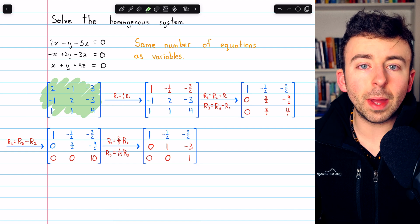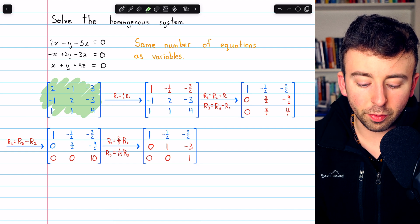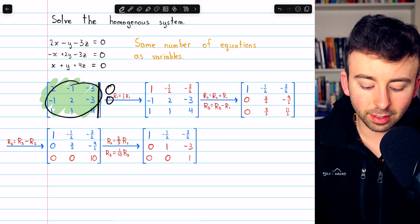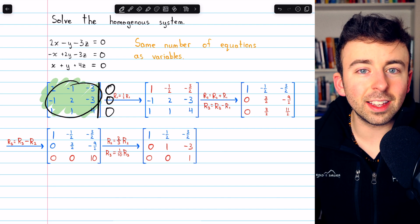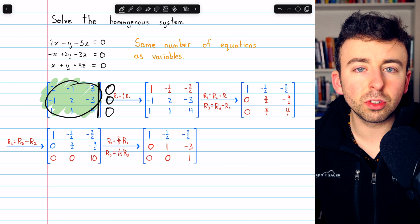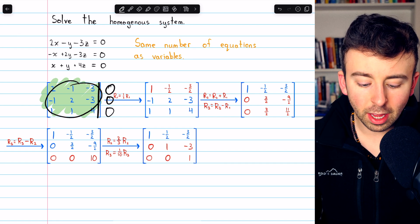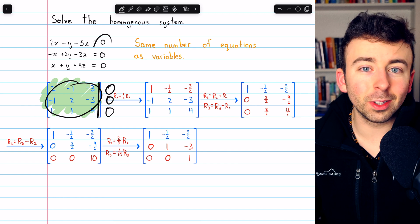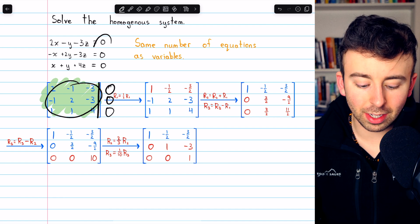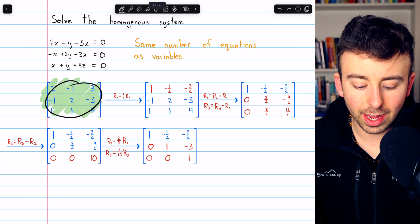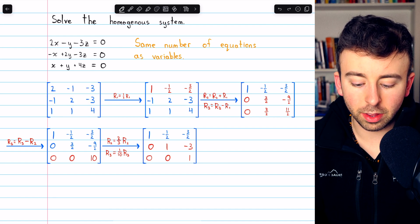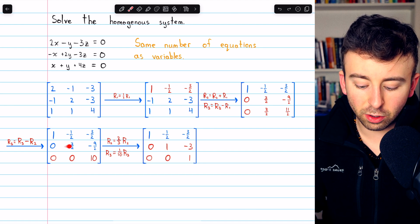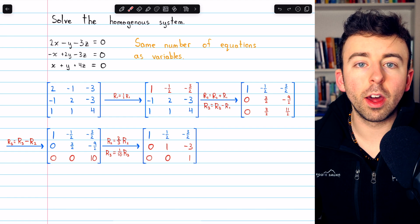Usually, we would use an augmented matrix with the coefficients in the matrix, but then also we would have the constants in the matrix. But for a homogeneous system, you actually don't need to store the constants in the matrix. Because no matter what elementary row operations we perform, the constants are still going to be zero. So these homogeneous systems are really nice in that way that we only have to worry about the coefficients.